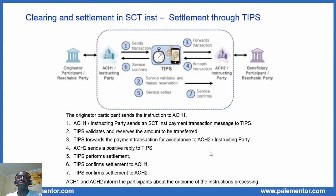On this picture, it is assumed that both originator and beneficiary participants use an ACH that settles true TIPS. But that may not always be the case. The receiving participant may be connected directly to TIPS. In that case, on the receiving side, the message will be exchanged directly with the beneficiary participant and not with its ACH. Another option is an originator participant sending directly to TIPS, with TIPS then exchanging messages with the ACH of the beneficiary participant.